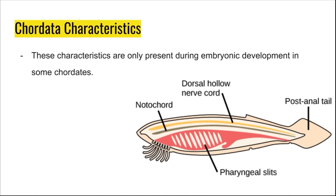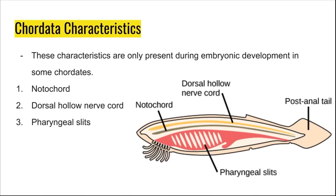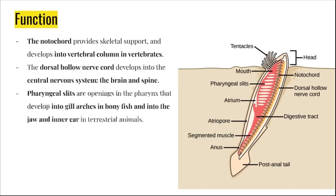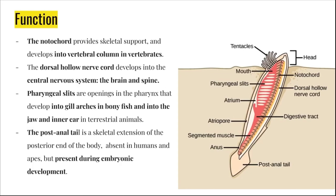These characteristics include a notochord, a dorsal hollow nerve cord, pharyngeal slits, and a post-anal tail. The dorsal hollow nerve cord develops into the central nervous system, which includes the brain and the spine. The pharyngeal slits are openings in the pharynx that develop into gill arches in bony fish and into the jaw and inner ear in terrestrial animals. The post-anal tail is a skeletal extension of the posterior end of the body. It's absent in humans, but present during embryonic development.